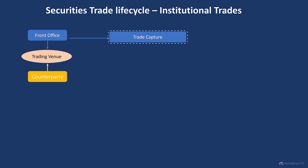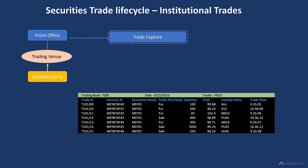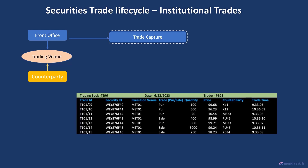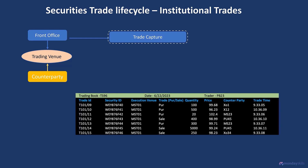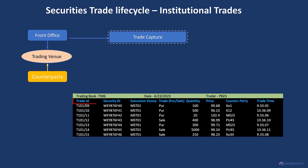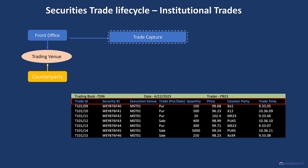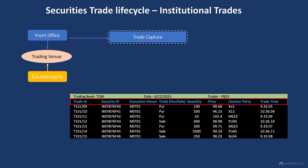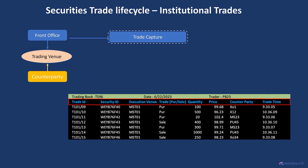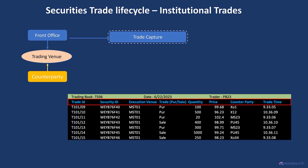All transactions executed by the front office will be captured onto a trade blotter. The blotter is typically electronic but can be spreadsheet-based, depending on the instrument traded or the capabilities of the IT systems used in the front office. The basic details captured include the security ID, name of the traded security, trade direction, traded price, quantity, counterparty ID, client or trading book ID, and trade execution time for the transaction.